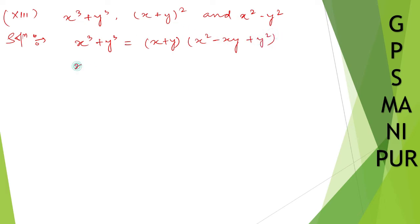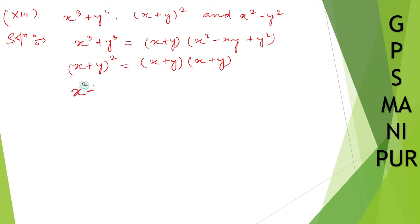Next, x plus y whole square — according to the formula, I can write down as x plus y into x plus y. Don't split the formula; if you split the formula, you cannot take common afterward. And x square minus y square is equal to x plus y into x minus y.